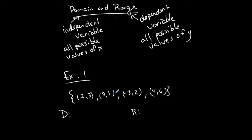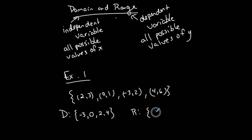I could still find a domain and range for any relation, but yes, this is a function. My domain represents all the x-coordinates, from least to greatest: negative 3, 0, 2, and 4. For the range, all values of y from least to greatest: 1, 2, 3, and 6.